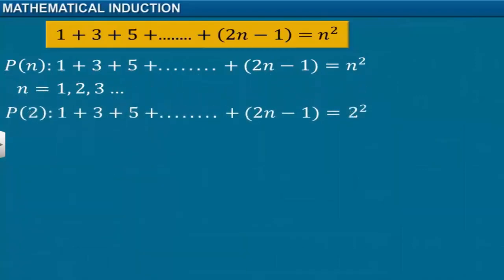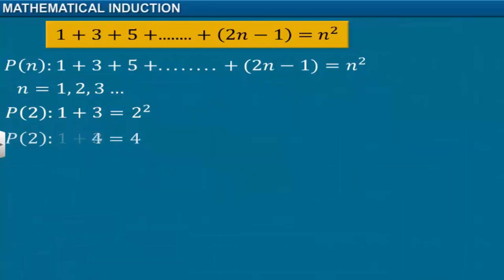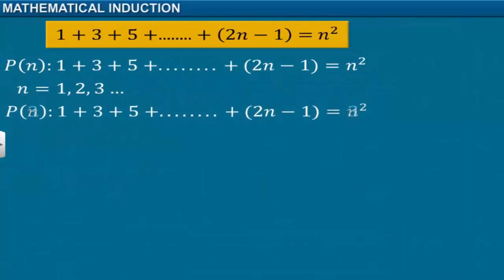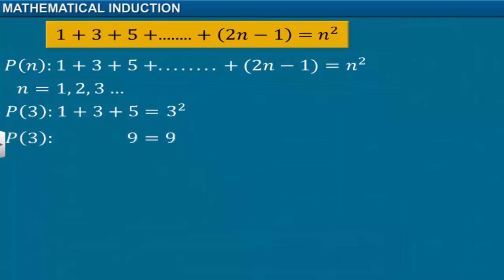Now we will take n equal to 2. The sum of the first two odd positive integers, 1 plus 3, is equal to 4, which is equal to the square of the number of terms, that is 2. Thus, it is proved that P(n) is true for n equal to 2. Next, consider n equal to 3 — the first three odd positive integers: 1, 3, and 5. The sum of the integers is 9, which is equal to the square of the number of terms. Thus, P(n) is true for n equal to 3.